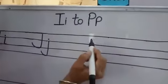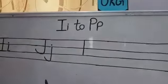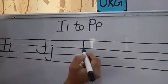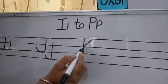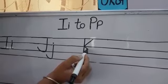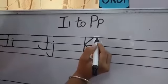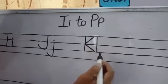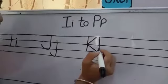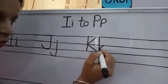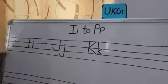Next is K — kite. For capital K, draw a standing line, then take a slanting line from the middle line joining the top line, and start again from the middle line going down to the third line. For small letter K, place a standing line and two slanting lines from the middle two lines.